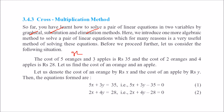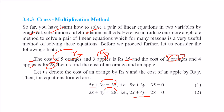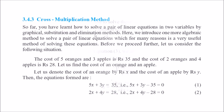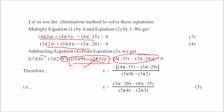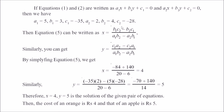Suppose 5 oranges (5x) and 3 apples (3y) cost 35, so 5x plus 3y equals 35. And 2 oranges (2x) plus 4 apples (4y) cost 28, so 2x plus 4y equals 28. We rearrange so the right side becomes 0. To solve, multiply the first equation by 4 and the second by 3 — the y terms are then numerically equal and can be eliminated to find x. Once x is found, substitute to get y.